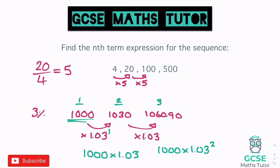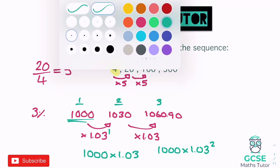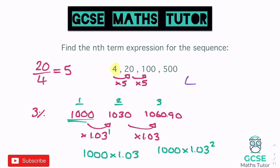We take our starting number, which in this case is 4. Just like with compound interest we times it by our ratio — in this case 5 — and then write n as a power. The second position had power 1, the third had power 2, so it's always n minus 1. So the nth term is 4 times 5 to the power of n minus 1.